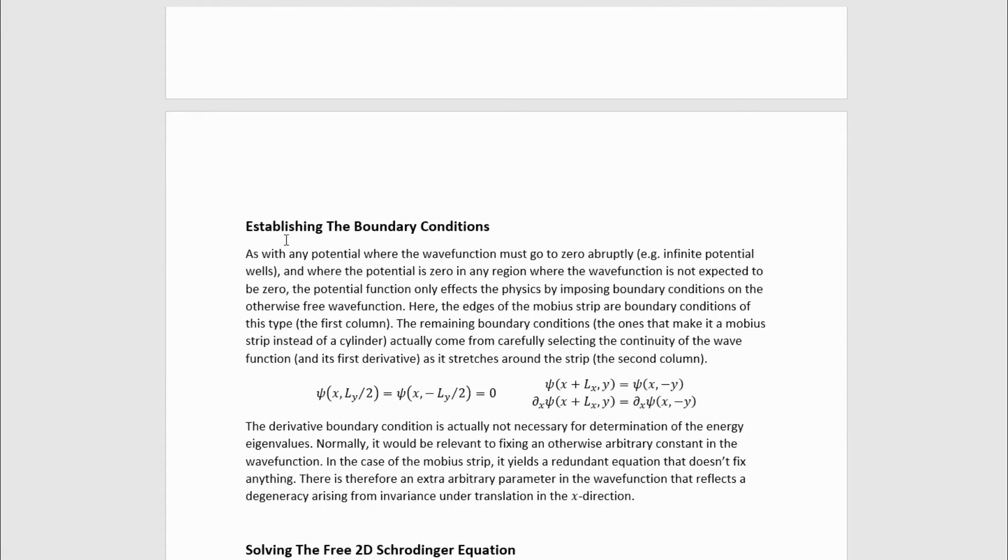The first step is to establish the boundary conditions. As with any potential where the wave function must go to zero abruptly, for example the infinite potential well, and where the potential is zero in any region where the wave function is not expected to be zero, the potential function only affects the physics by imposing boundary conditions on the otherwise free wave function. Here, the edges of the Mobius strip are boundary conditions of this type. These first column boundary conditions here are what I'm talking about, and they just reflect the fact that the electron is not allowed to leave the Mobius strip.